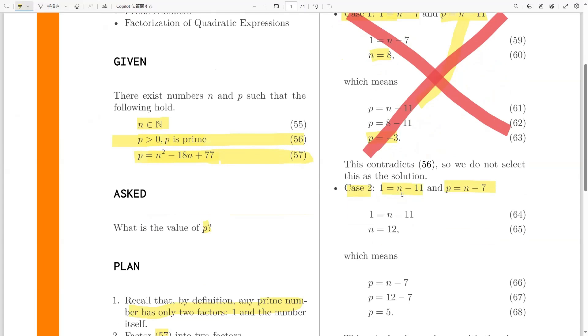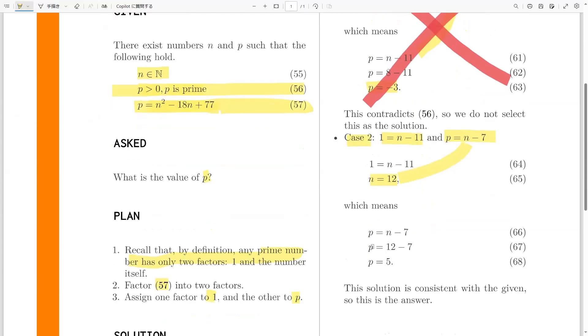If 1 equals n minus 11, then we have n equals 12. And we plug that in here, we get p equals 12 minus 7, which gives us p equals 5.